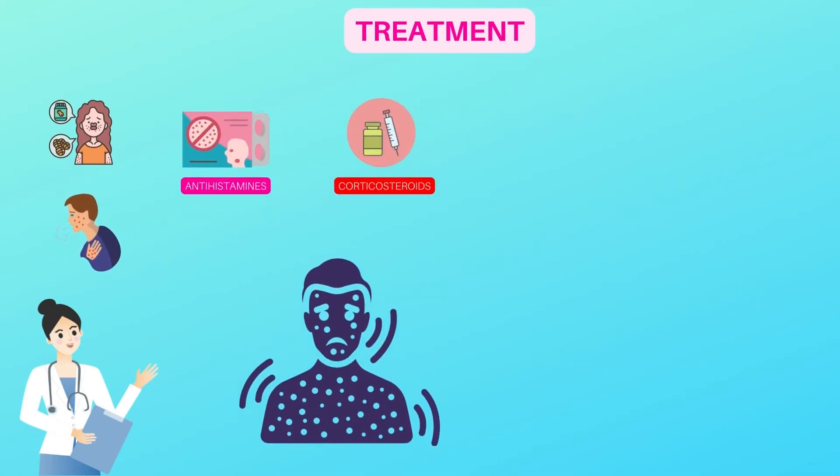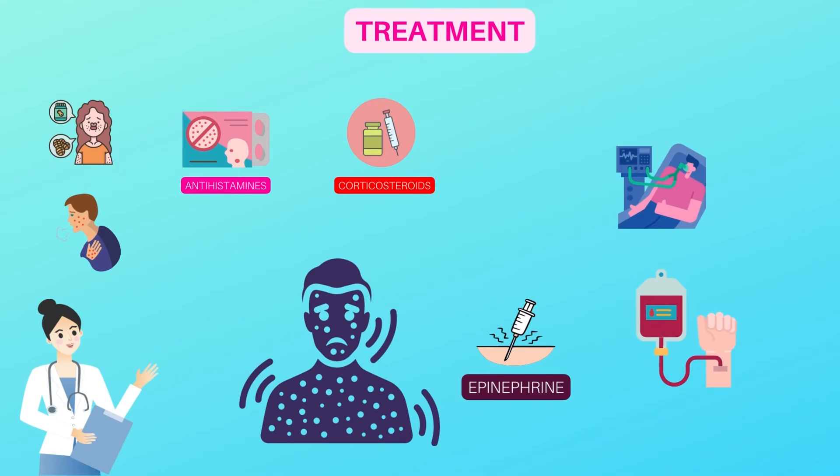If you have severe angioedema and are having trouble breathing, you need immediate emergency care. You will get epinephrine, a type of adrenaline. You may also need a breathing tube, blood plasma products, and certain other medicines may be used.